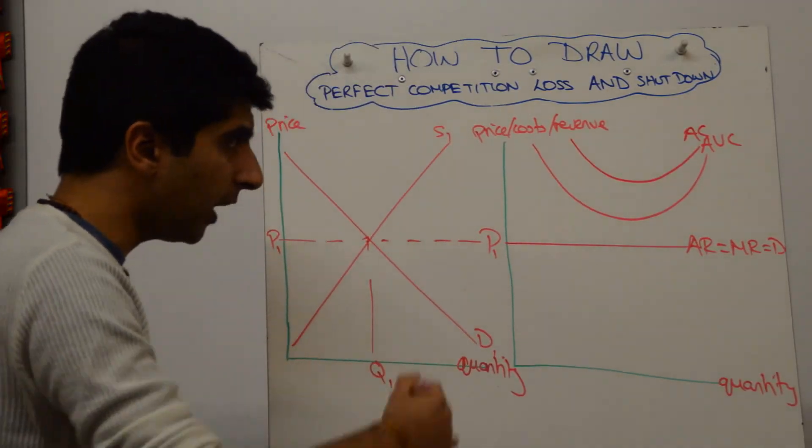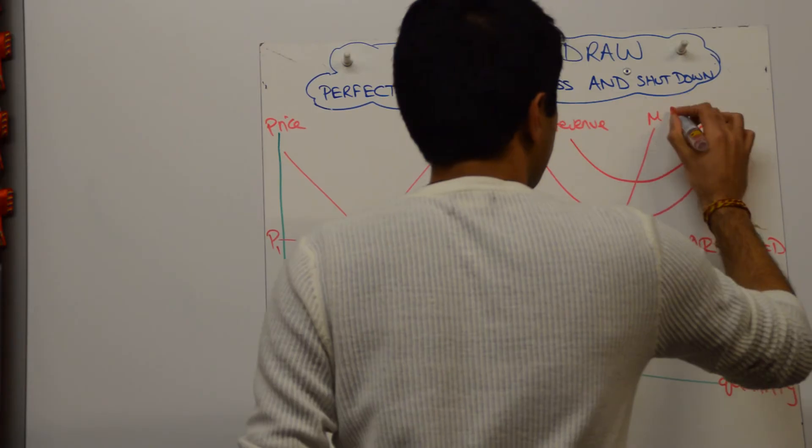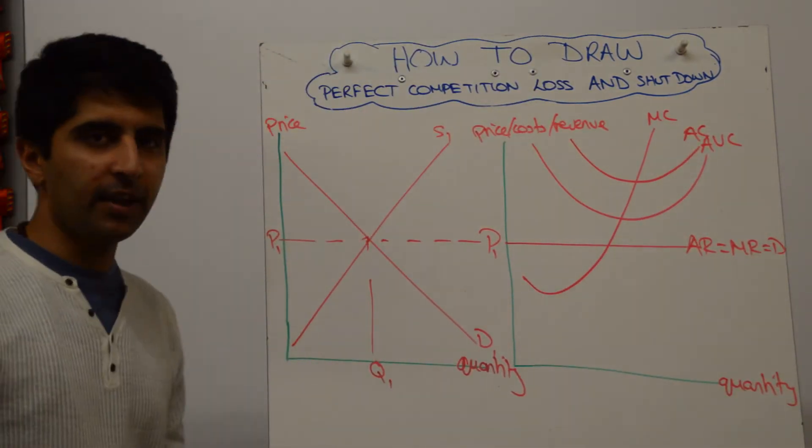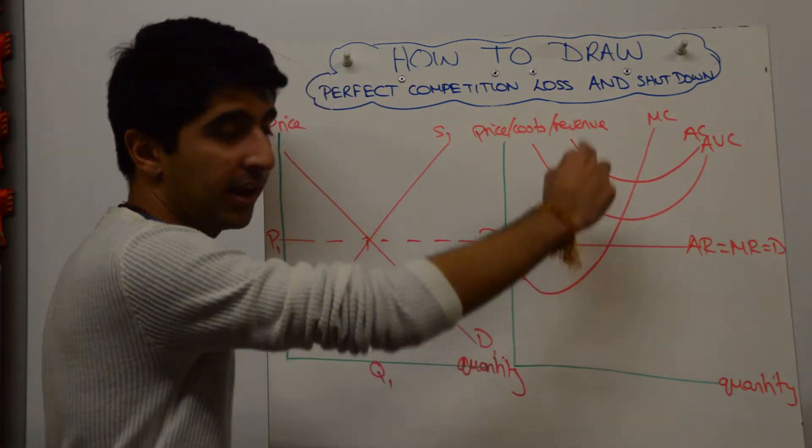Call that AC, and then your marginal cost cutting both at the minimum points. Alright, so the same trick as what we did before. Construct it that way: AVC first, then AC, then MC.